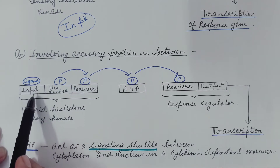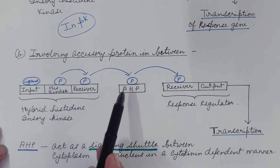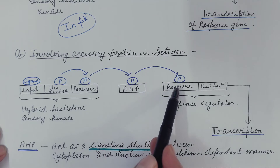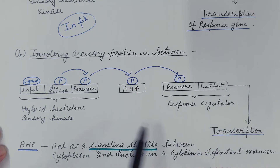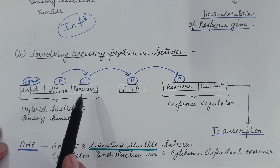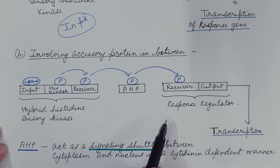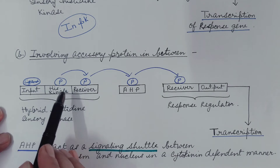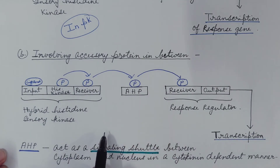So first, the ligand comes and binds with the input region, which leads to autophosphorylation of the histidine kinase — phosphate group is provided by ATP. This is then followed by phosphorylation of the receiver domain, which then phosphorylates the AHP, followed by phosphorylation of the receiver domain, then the output region, leading to transcription. AHP mediates the transfer of the phosphoryl group from the receiver domain of the activated histidine kinase receptor to the receiver domain of the response regulator, in a multi-step phosphorelay — that is, the phosphate group is transferred in several steps in relay manner. This second type of signaling system is seen in higher plants.